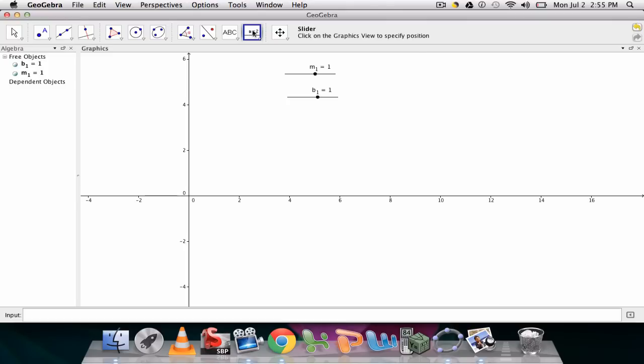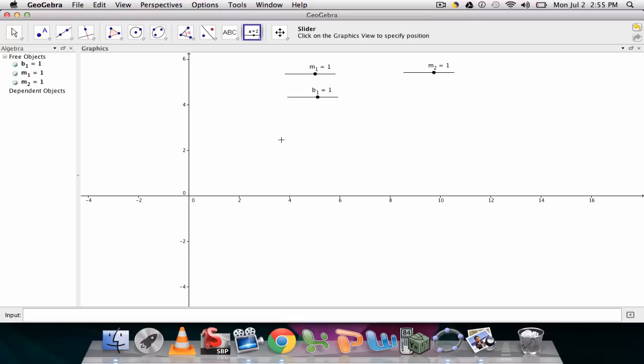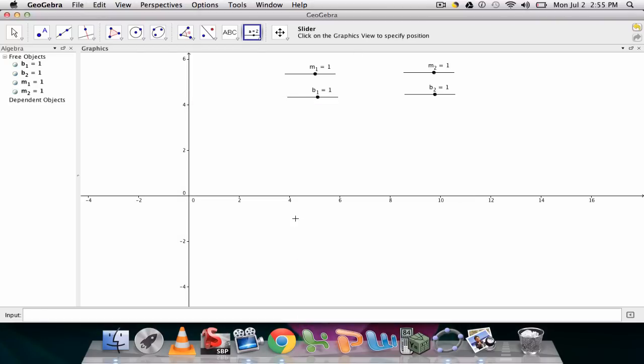And then I'll do the same thing for the second line. So again m underscore 2 for the slope of the second line. And then one last time b underscore 2 for the y-intercept of our second line.